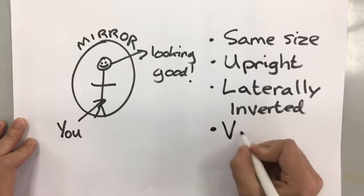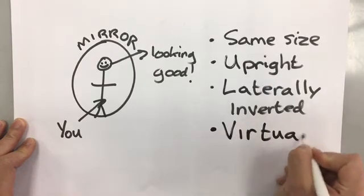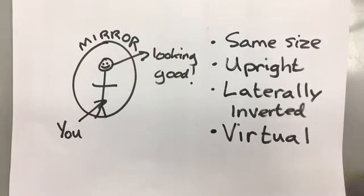The final thing we say about your image in a mirror is that it's virtual. Virtual means it's not formed by real rays of light. Your image isn't actually behind the mirror. Behind the mirror is probably a wall or someone else's bedroom.